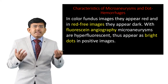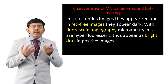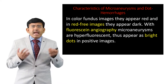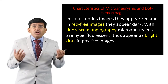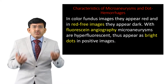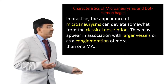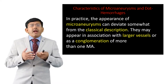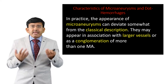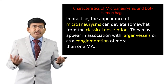With fluorescent angiography, microaneurisms are hyperfluorescent and thus appear as bright dots in positive images. These are certain appearances of microaneurisms, and using their appropriate color model we can easily detect and classify them.